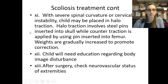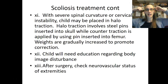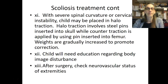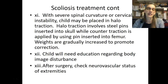Education is very important. For scoliosis treatment continued with severe spinal curvature or cervical instability, the child may be placed in halo traction. Halo traction involves steel pins inserted into the skull while counter traction is applied using a pin inserted into the femur. Weights are then gradually increased to promote correction. The child needs education regarding body image disturbance. Encourage the child to discuss their feelings and help select clothing that is current style but loose enough for the brace or traction.